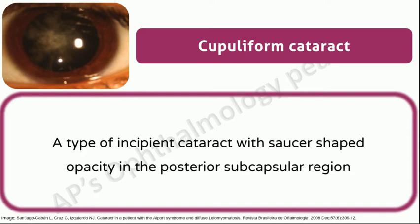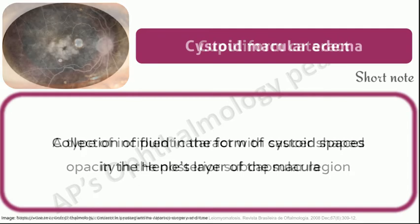Cupuliform cataract: a type of incipient cataract with saucer-shaped opacity in the posterior subcapsular region. Since the opacity lies in the visual axis, when the pupil is constricted, it prevents the central rays of light from reaching the retina, and hence vision is worse in the daytime — that is, there is hemeralopia.